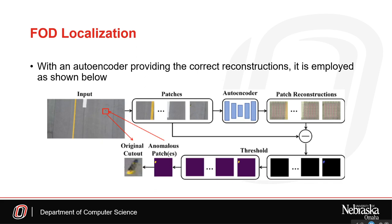Once the autoencoder is performing with the specifications mentioned previously, it is utilized in the way shown on this slide. First, the input image is patched to the input size required by the autoencoder. Next, the patches are reconstructed using the autoencoder. The absolute difference between the original patches and the patch reconstructions is then computed. We threshold the absolute difference image automatically using OTSU's method. Any threshold patches with non-zero values after thresholding are considered anomalous patches, providing the localization as shown in the figure.